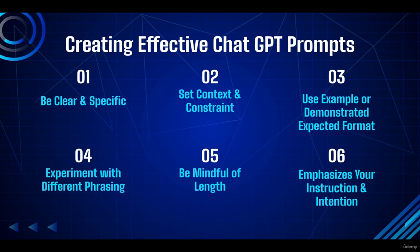In this video we're going to learn how to create effective ChatGPT prompts. There are six aspects to pay close attention to. The first one: be clear and specific. Create prompts that provide clear instructions or ask specific questions to guide the model's response. Clearly define the desired outcome or the information you're seeking to obtain more accurate and targeted responses. It's very crucial that ChatGPT understands what you want and need.